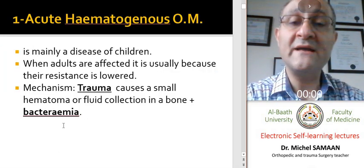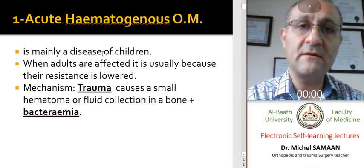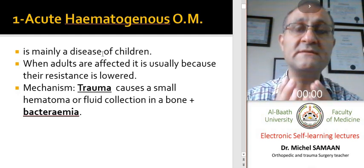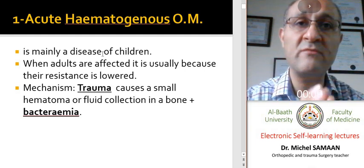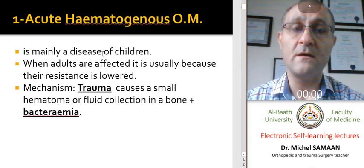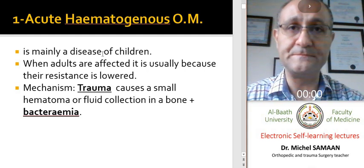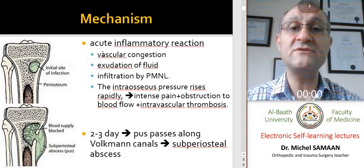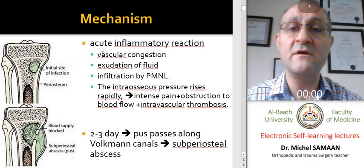Acute hematogenous osteomyelitis usually is a disease of children. Adults may be affected but in a lower percentage. The usual major mechanism is trauma to the extremity that causes a small swelling or small hematoma formation, and a simultaneous bacteremia because of a remote site of infection, as in tonsillitis or bowel infection for example. When we have this acute inflammatory reaction, we have vascular congestion, exudation of fluids, excessive exudation of fluids, and infiltration with leukocytes.